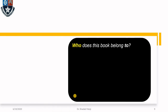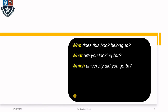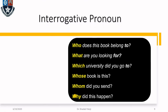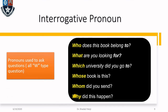Now let us look at this. 'Who does this book belong to?' 'What are you looking for?' 'Which university did you go to?' 'Whose book is this?' 'Whom did you send?' All the yellow highlighted words are the question form and start with W. 'Why did this happen?' These kinds of words in question form are called interrogative pronouns — pronouns that are used to ask questions. All W-type questions would be interrogative pronouns.